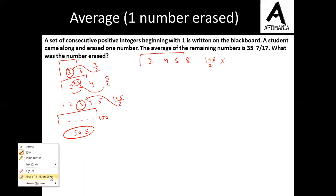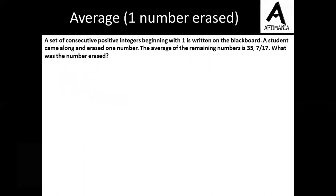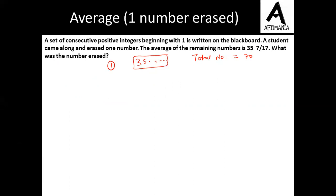The average of the remaining numbers is 35 and 7 by 17, so we can say the average is 35 point something. As we know this must be the middle value, the total number of terms must be something around 70. This is the most important point: because the numbers are consecutive and the average is 35 point something, this must be the middle value, so the total count should be double — around 70.